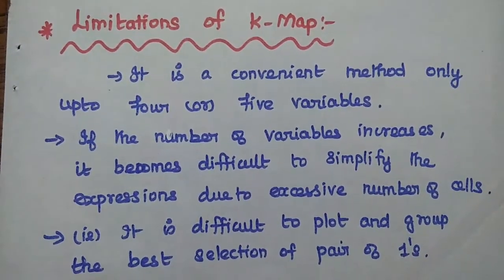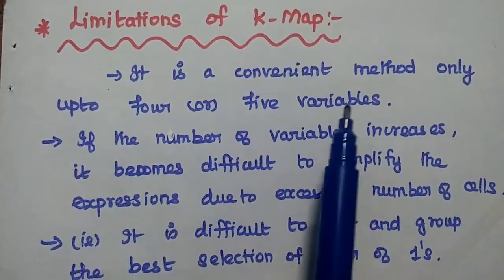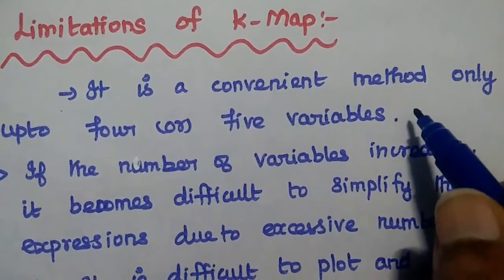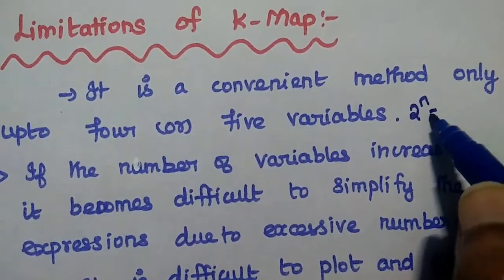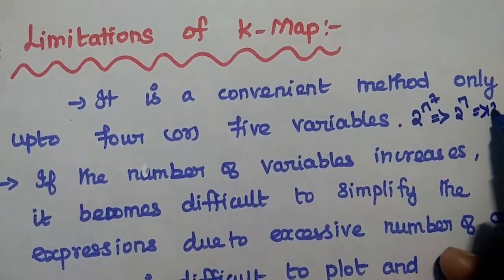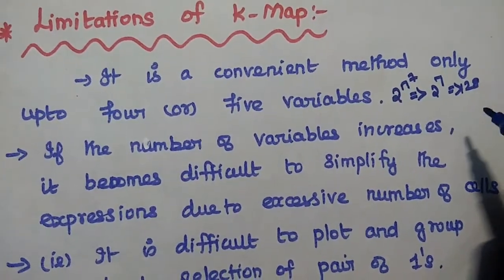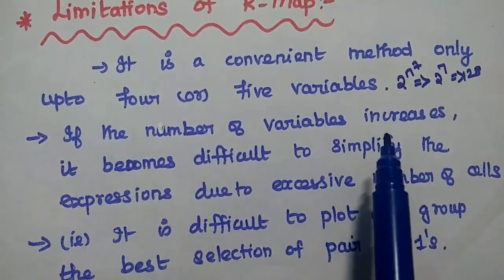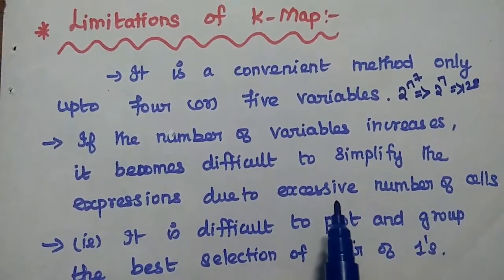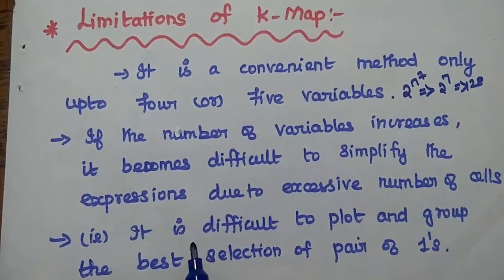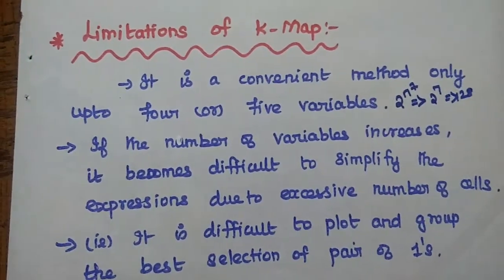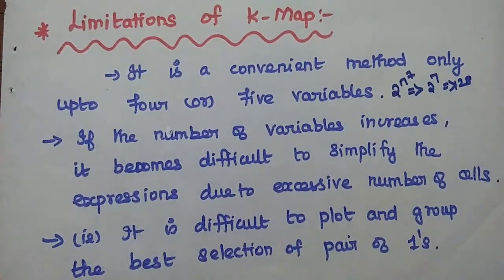Limitations of K-map: K-map is a convenient method only up to 4 or 5 variables. For larger numbers of variables, the number of cells grows exponentially — for example, 7 variables require 128 cells. As the number of variables increases, it becomes increasingly difficult to plot and select the best groupings of ones, making simplification impractical.